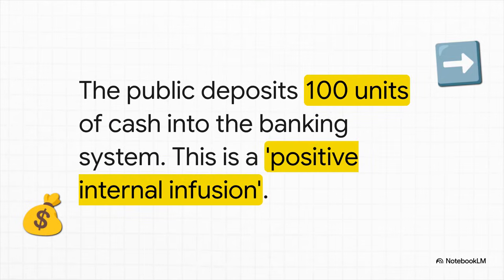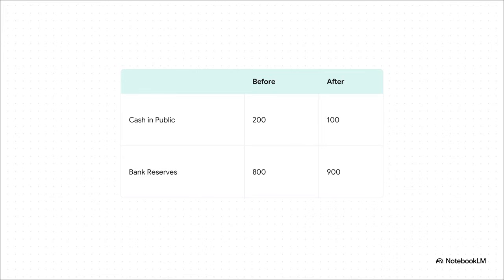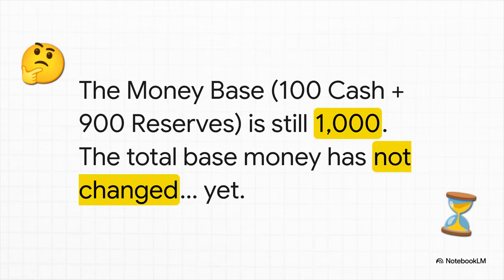Now let's introduce one tiny change and watch the dominoes fall. Imagine someone finds 100 units stuffed under their mattress and deposits it in their bank account. Immediately, cash in public hands drops from 200 to 100, and bank reserves rise from 800 to 900 — a direct transfer of funds. But pay attention: the new cash (100) plus new reserves (900) still adds up to 1,000. The total money base has not changed at all.